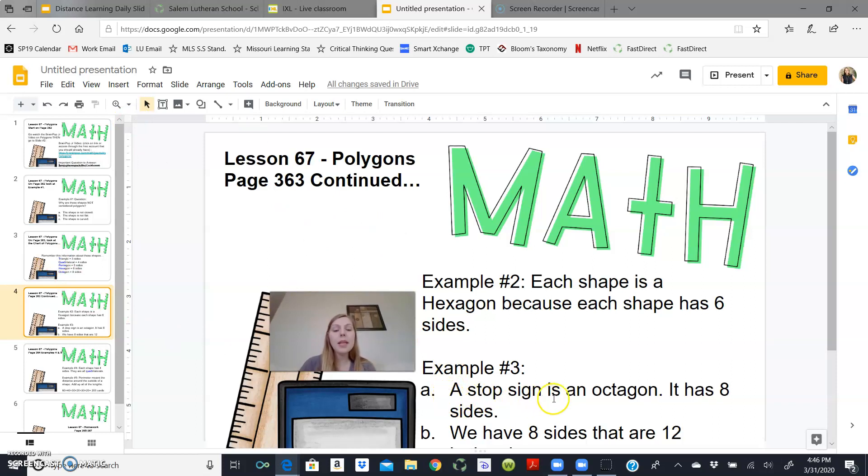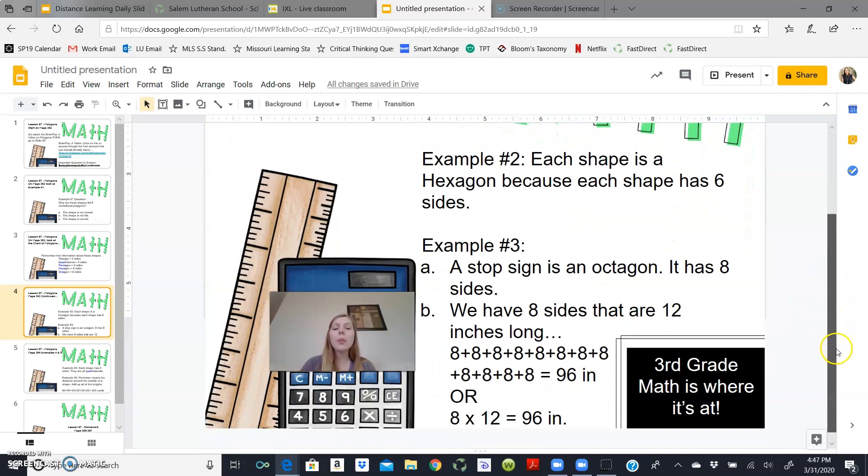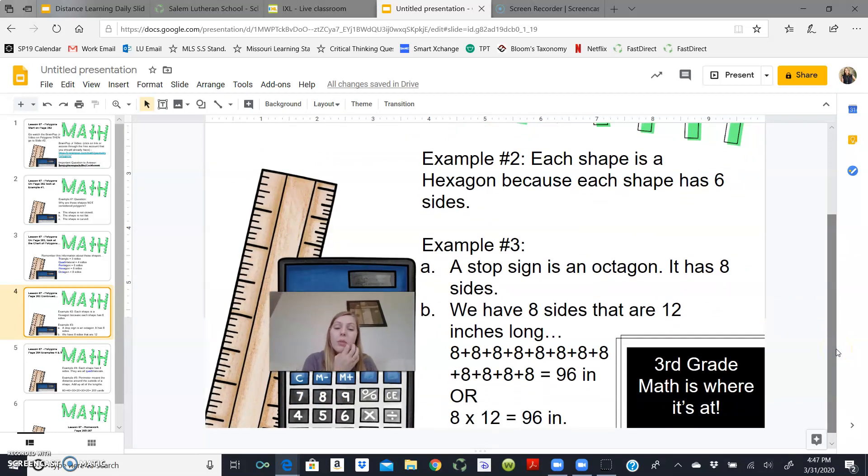So A, a stop sign is an octagon. It has eight sides. Now for B, it's asking us to find the perimeter. Now as a refresh, to find the perimeter means to add up the total distance of a given shape. So if we have eight sides that are 12 inches long, we can either repeat our addition problem of 8 plus 8 plus 8 twelve times or we know that if I have 12 groups of 8, my multiplication problem would be 8 times 12. You can look in your multiplication chart and tell me that 8 times 12 equals 96 and we can't forget our label. 8 times 12 equals 96 inches.